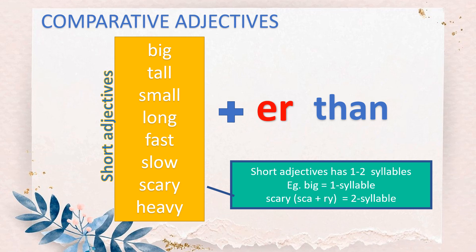We still have comparative adjectives. The words in the yellow box are all short adjectives that you have done before. All these short adjectives have one to two syllables. Big is only one syllable. Tall, only one syllable. So you have to put -ER. After the comparative adjective, you must have the word 'than'.